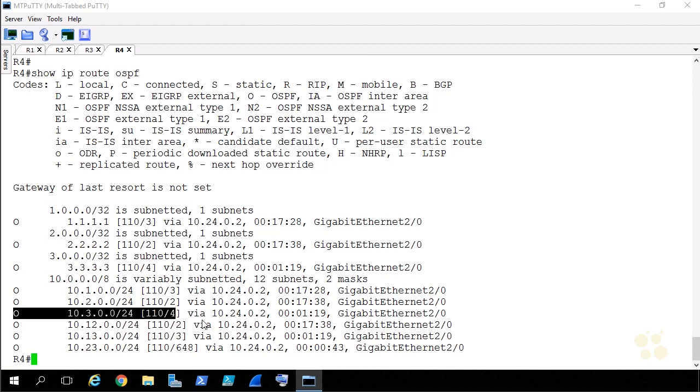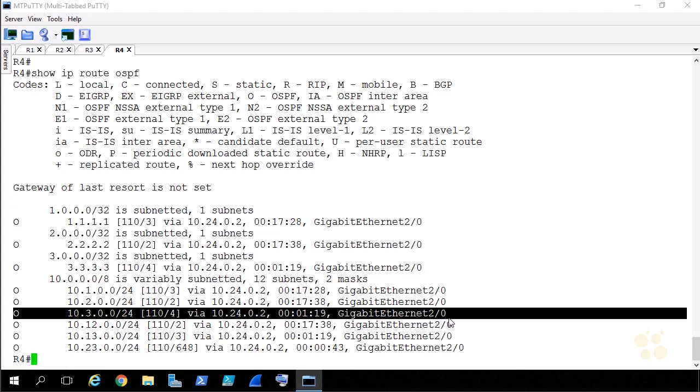10.3 is the network that is sitting behind R3, and look at this, router 4 has changed its tune. It says, well, now to get to 10.3 network, my next hop is 10.24.0.2, it's going north up to R2, and the exit interface is gigabit ethernet 2.0. And you'll notice that none of the OSPF learned routes are using that fast ethernet interface to forward traffic, because based on our topology and the cost involved, that fast ethernet path is the worst one of the options available.